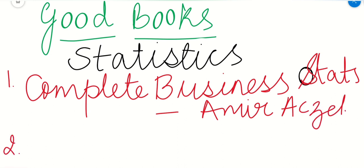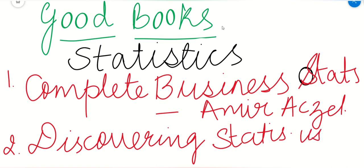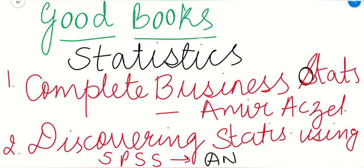The second book which is very good for statistics is Discovering Statistics Using SPSS, and this book is given by Andy Field. So the two good books you can refer for statistics are Complete Business Statistics by Amir, and Discovering Statistics Using SPSS by Andy Field.